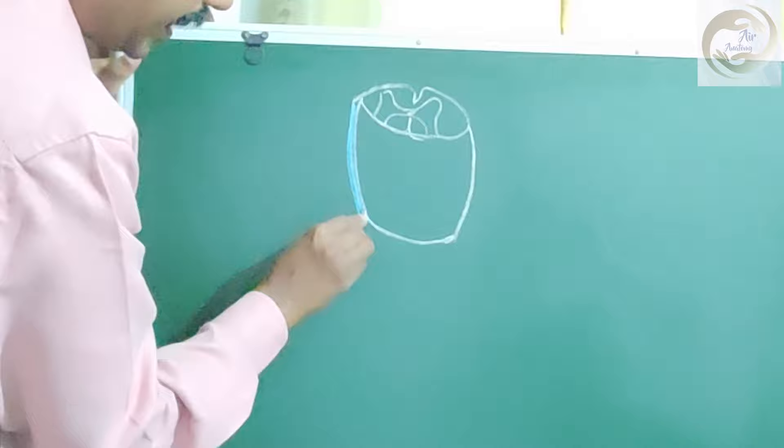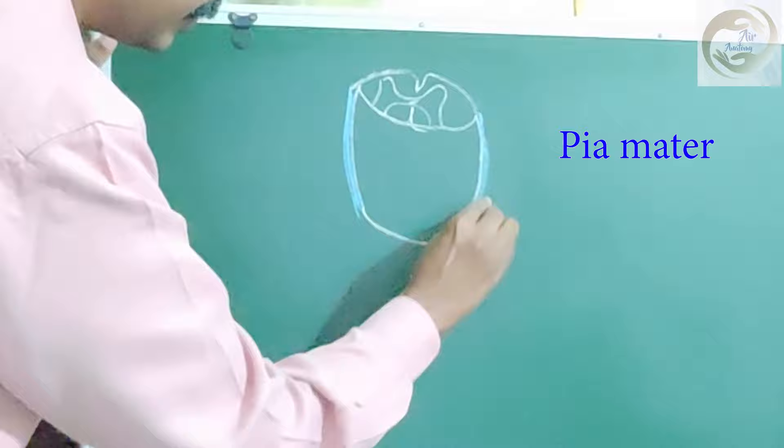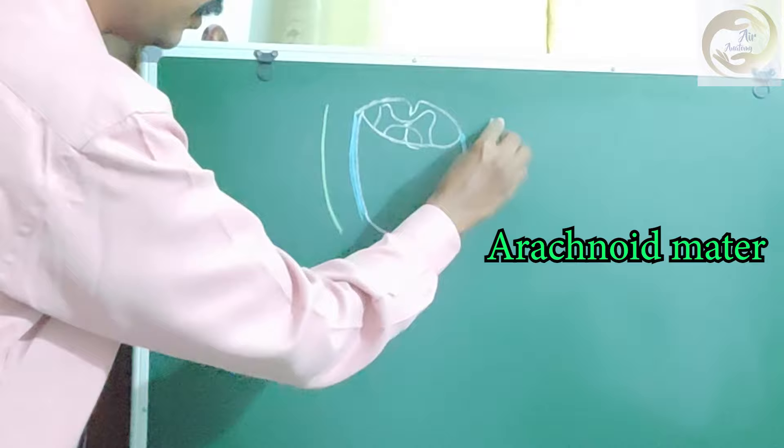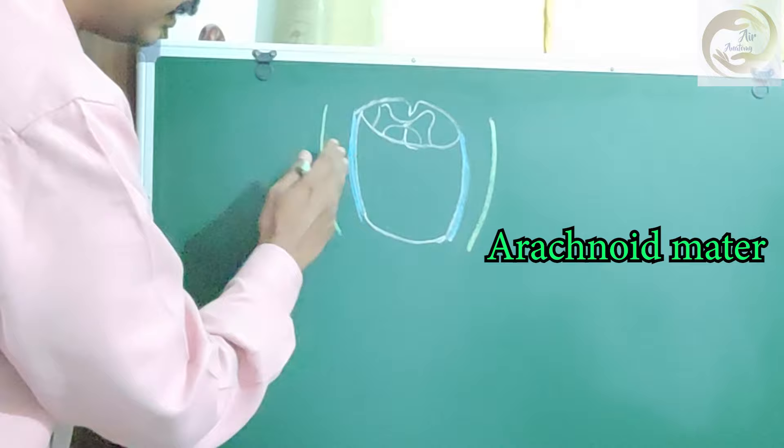Around the spinal cord you have an investing layer — the pia mater. The pia mater will be adhered onto the spinal cord tissue. You cannot practically strip off the pia mater from the spinal cord tissue. Outside the pia mater, you have the arachnoid mater. The arachnoid mater is a flimsy, translucent, spidery web-like layer.